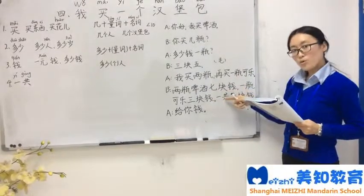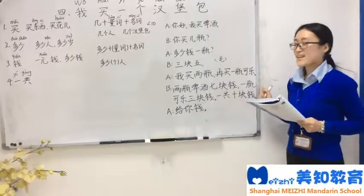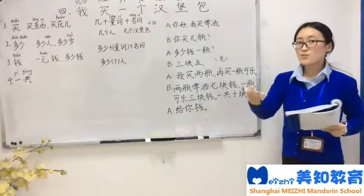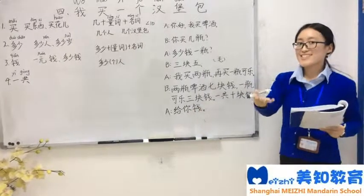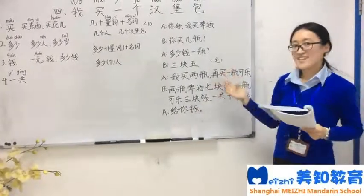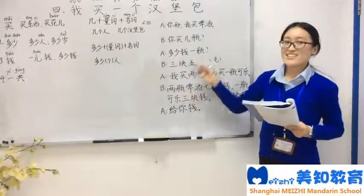So you will use 一共 — 一共十块钱. 给你钱 means 'here is the money'.